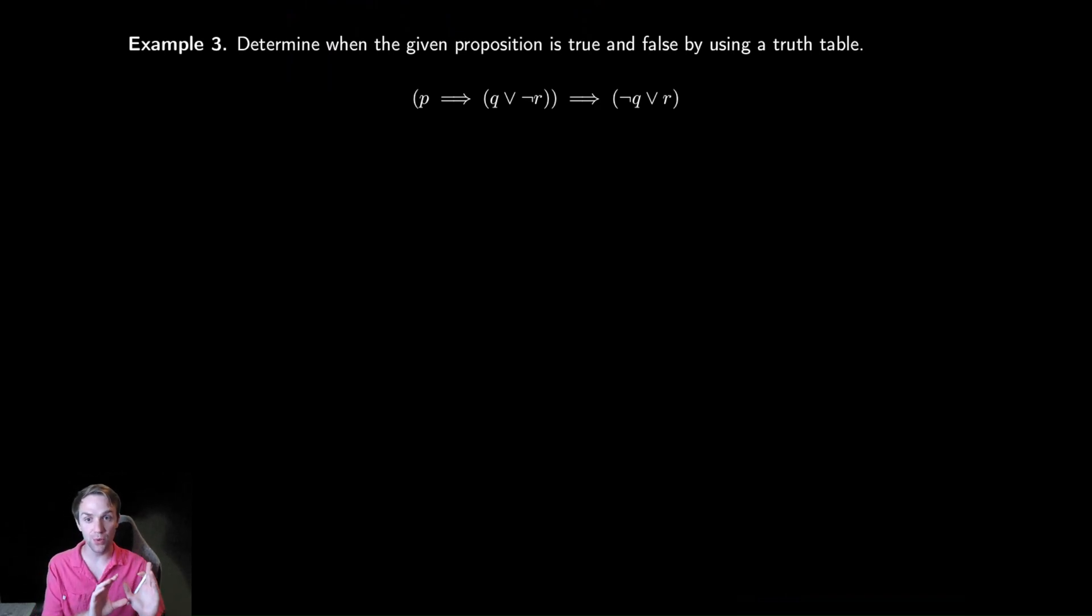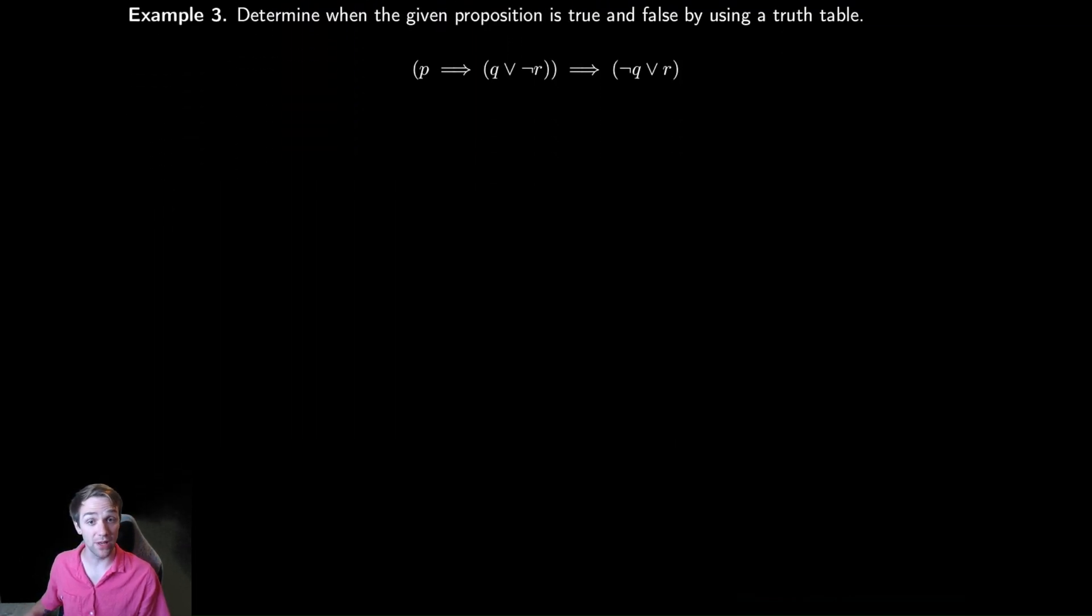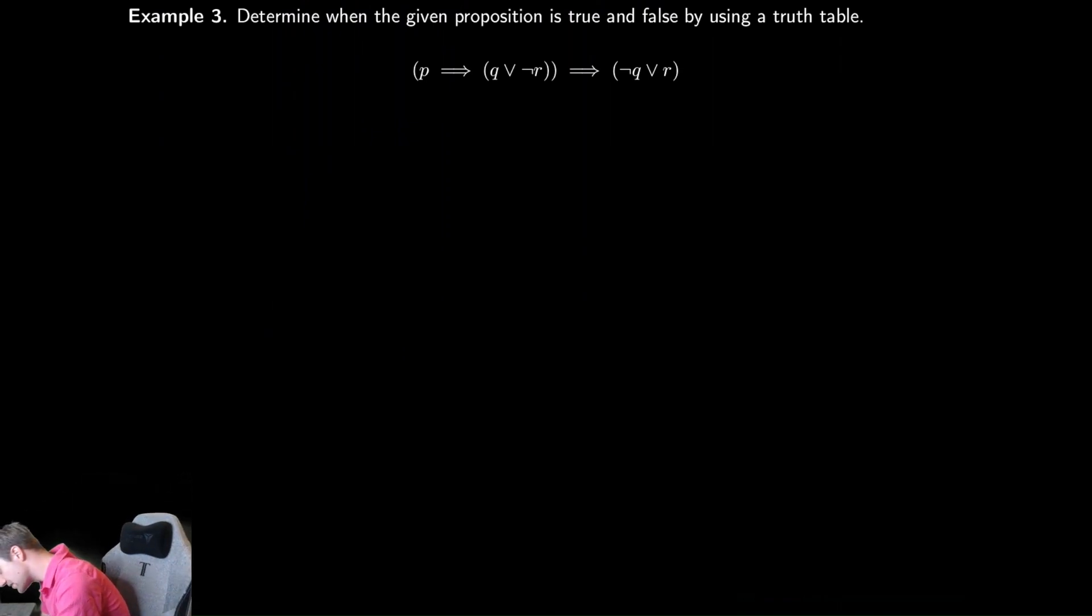Having just worked through a whole bunch of details about why we have this particular truth table up here, let's try and work through an example and see how this works in practice.